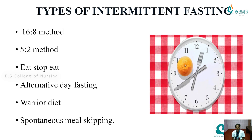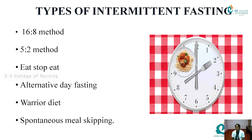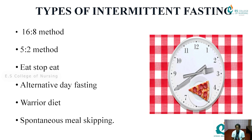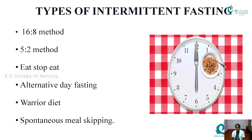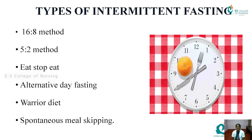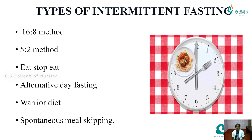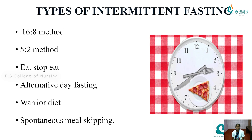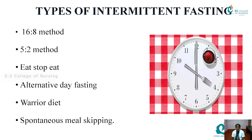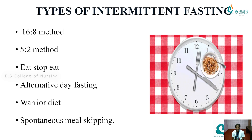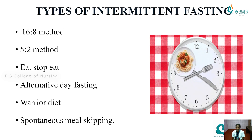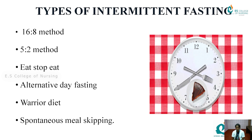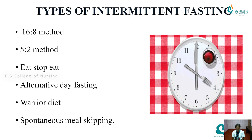Now we come to the types of intermittent fasting. We have different types: the 16:8 method, 5:2 method, eat-stop-eat method, alternative day fasting method, warrior diet, and spontaneous meal skipping. These are the methods we are going to discuss one by one.